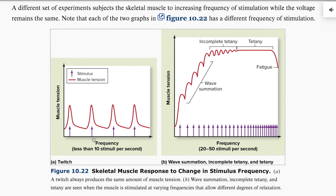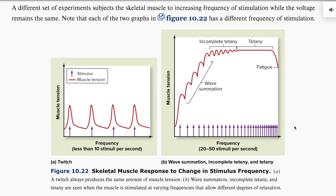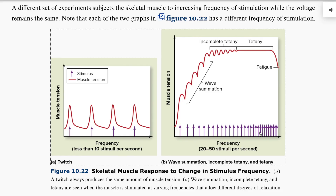These two graphs show you: this one is a frequency of less than 10 stimuli per second — beep, beep, beep, beep. The other is beep-beep-beep much more rapidly, right? We are essentially increasing the frequency. We have 20 to 50 stimuli per second, as opposed to a fixed slower rate.